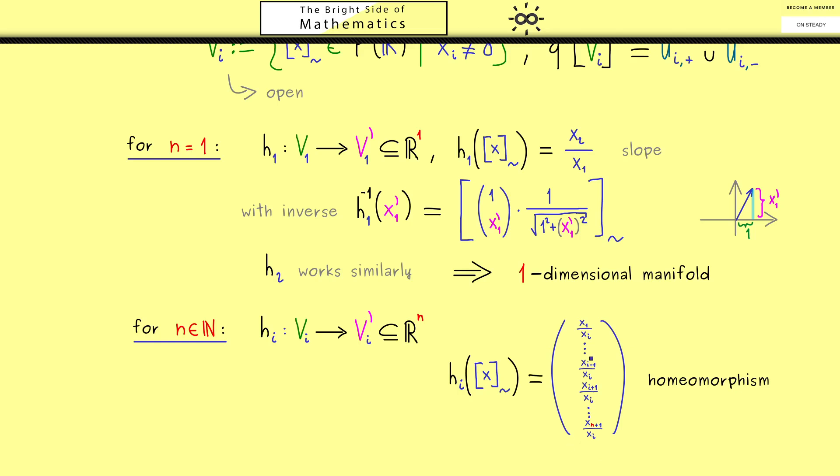And now you should see this works for each i from 1 to n+1. And moreover, similarly to before we can show that this is a homeomorphism. Of course the inverse looks more complicated than before, but the idea is the same. We just put 1 to the i-th position and then we scale it back to the sphere. And then of course our conclusion is that we have an n-dimensional manifold. So this is what you can remember. The projective space is an example of an abstract manifold.